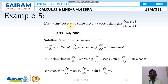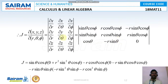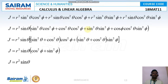Next problem: x = r sinθ cosφ, y = r sinθ sinφ, z = r cosθ. We need to find xr, xθ, xφ, yr, yθ, yφ, zr, zθ, zφ. Computing all partial derivatives and substituting into the 3×3 matrix, then simplifying using normal matrix methods, we get J = r² sinθ.